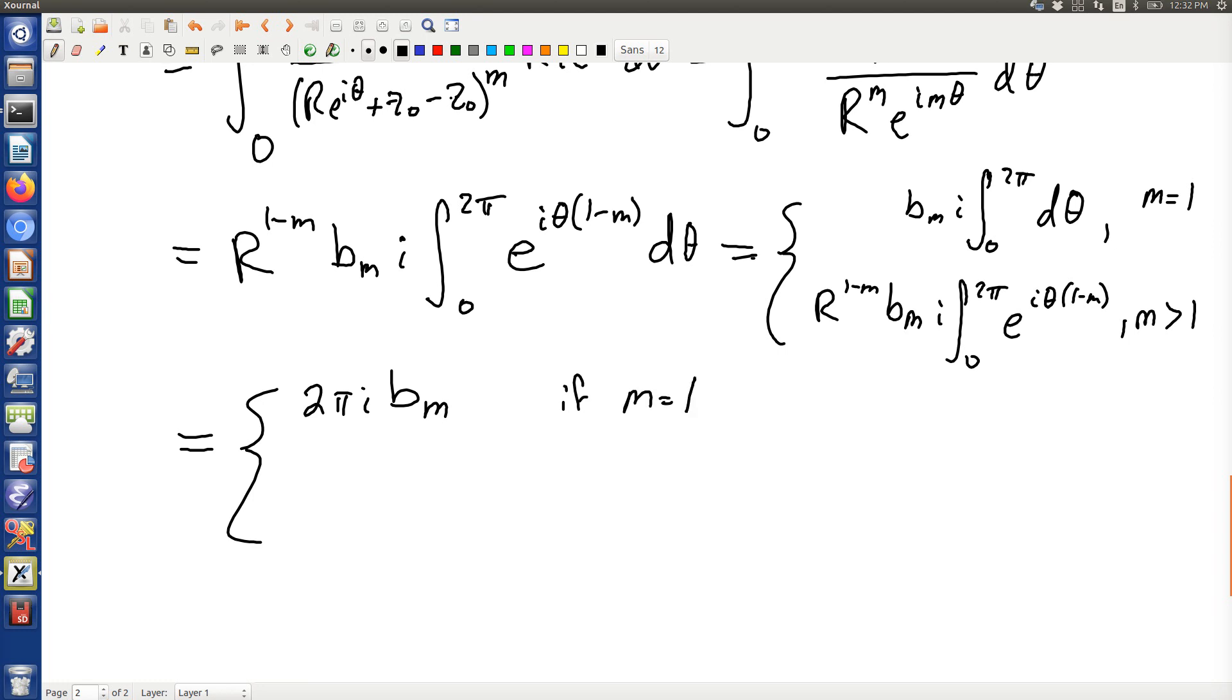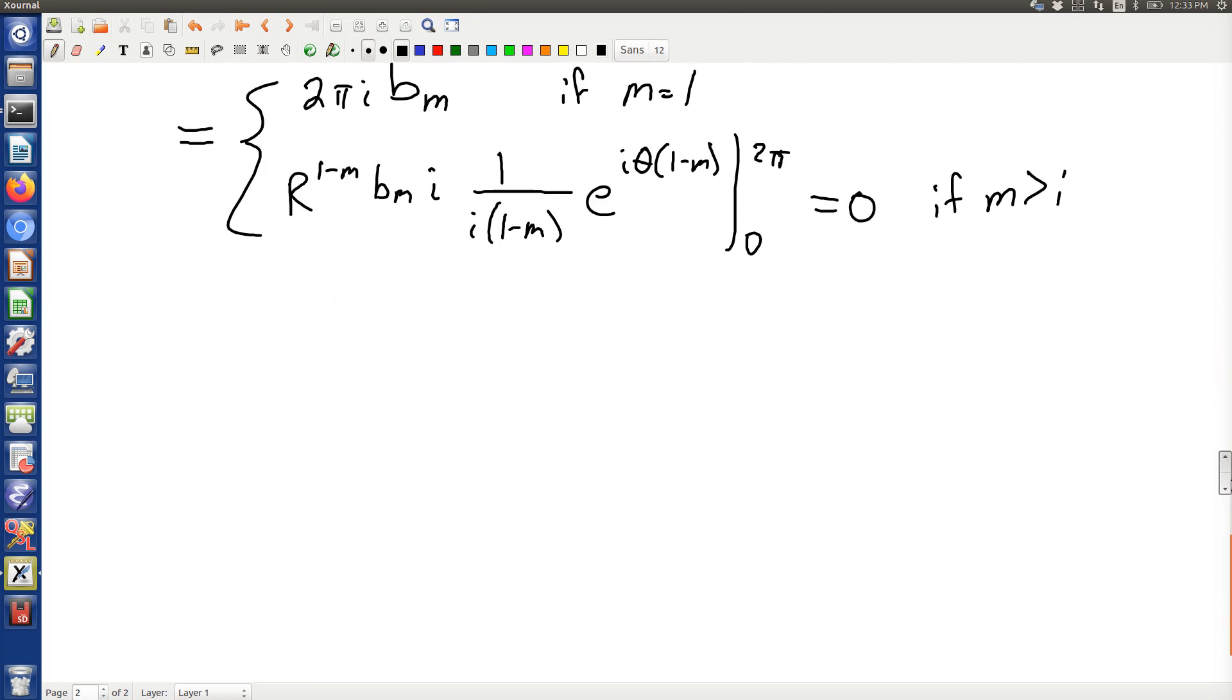Otherwise, this is going to be 1 over i(1-m) times e^(iθ(1-m)) between 0 and 2π. The thing to notice is that e^(iθ) times some integer, when theta equals 0 or 2π, are actually the same number. They're both 1, so this whole thing equals 0.